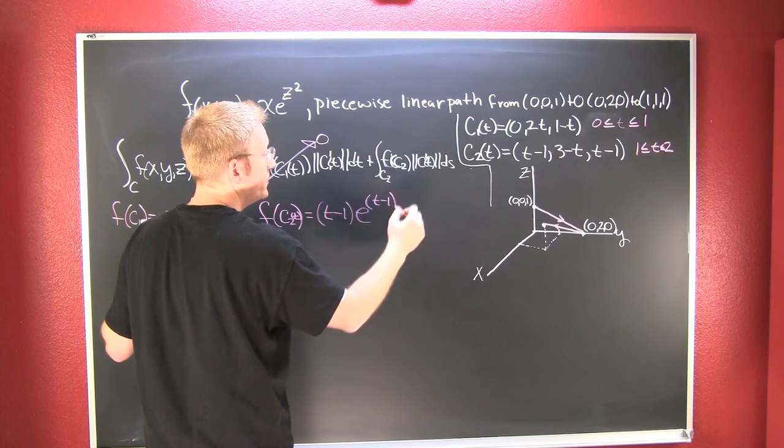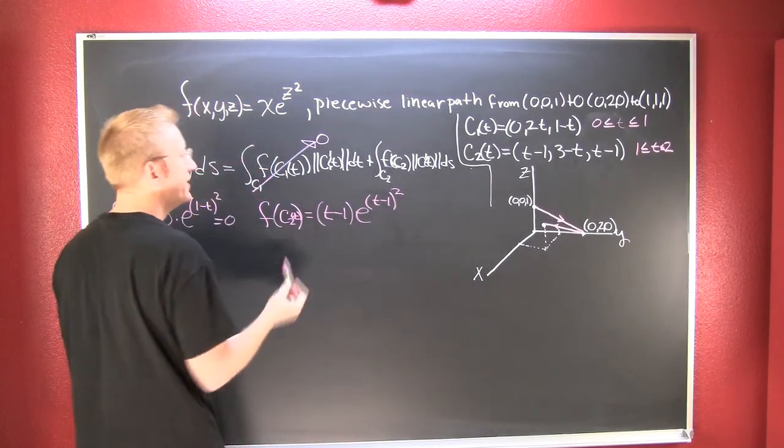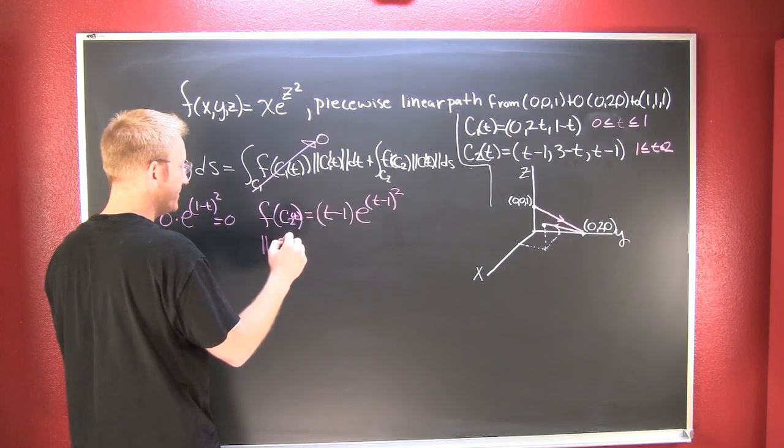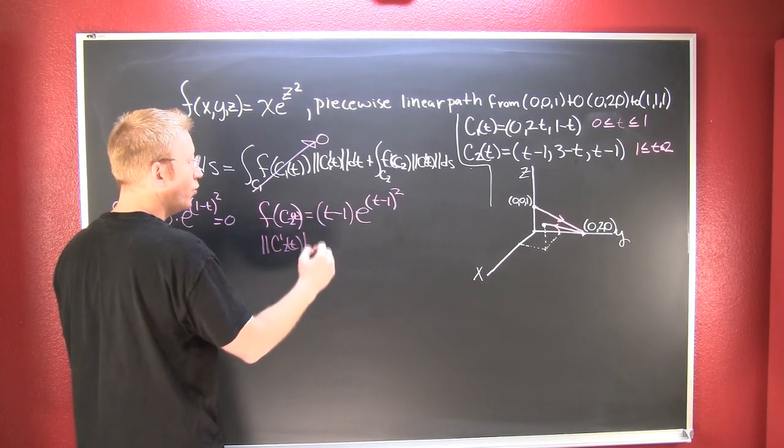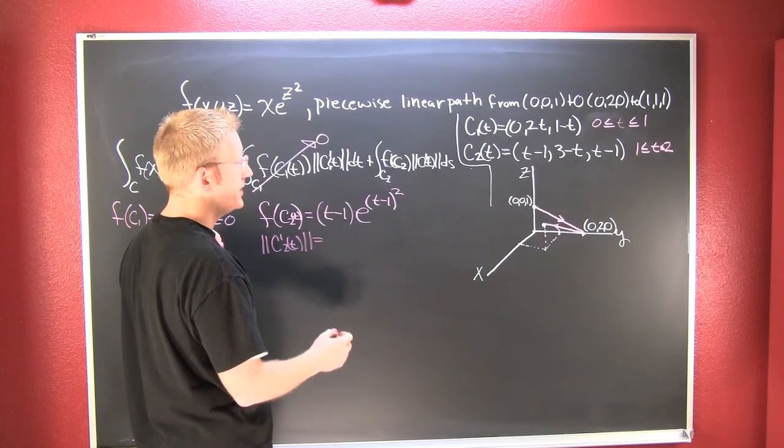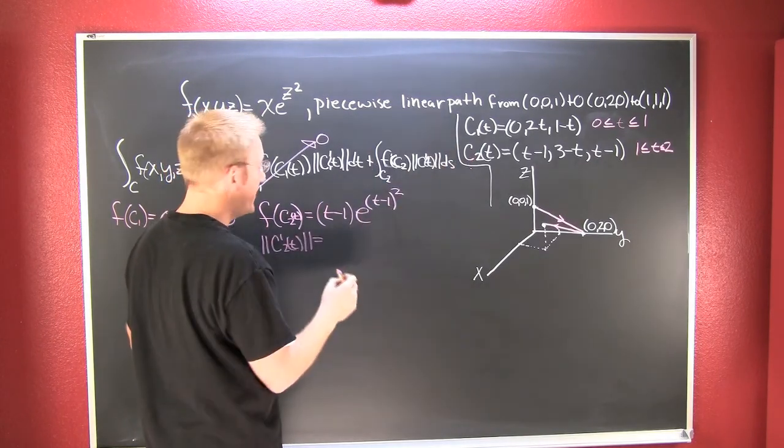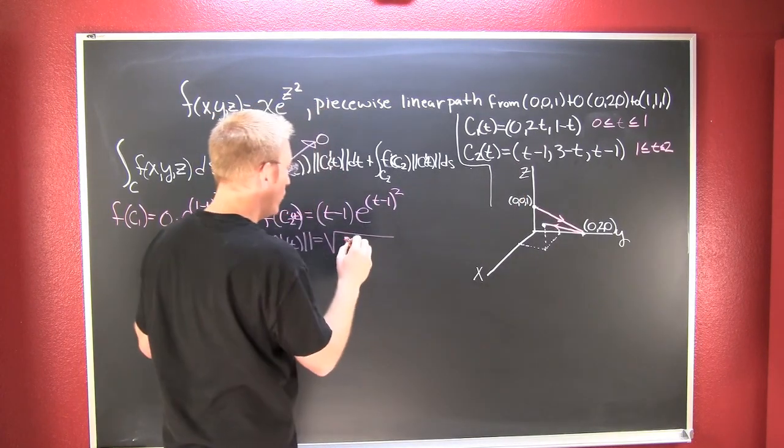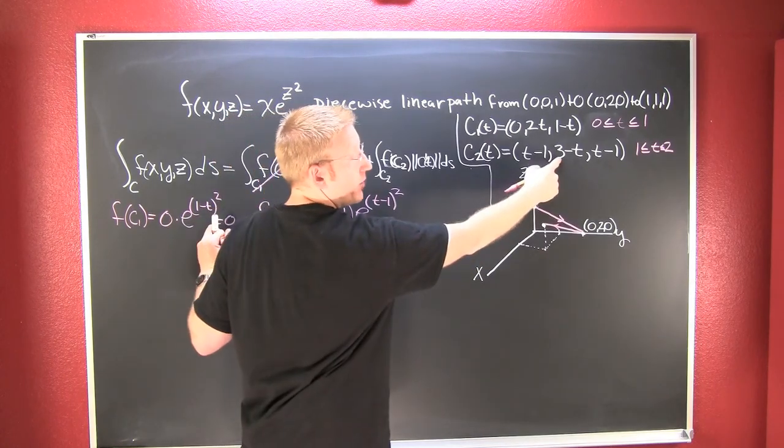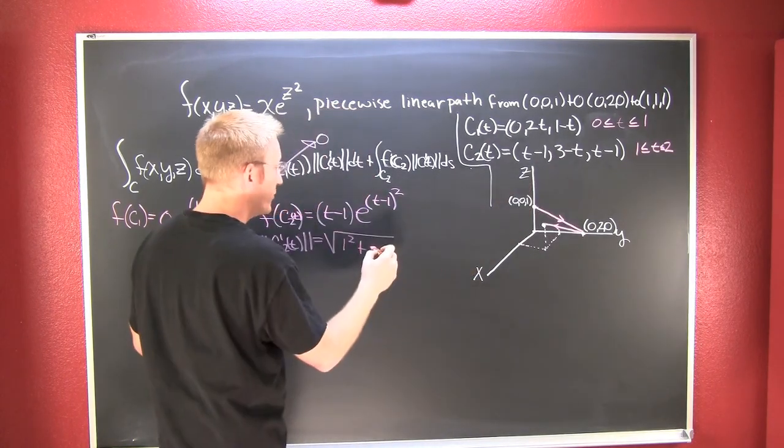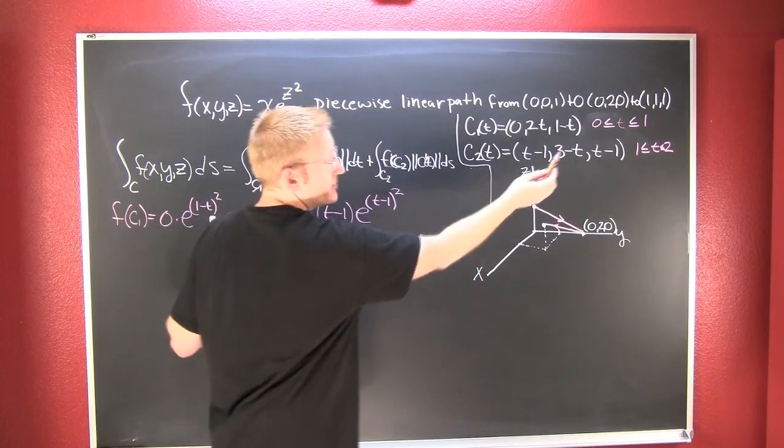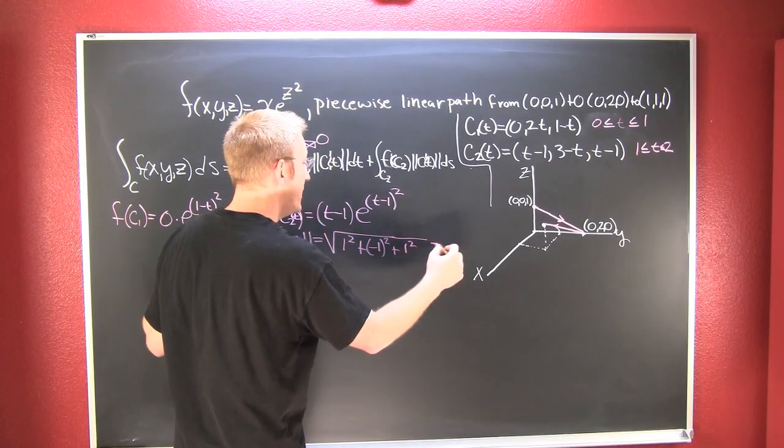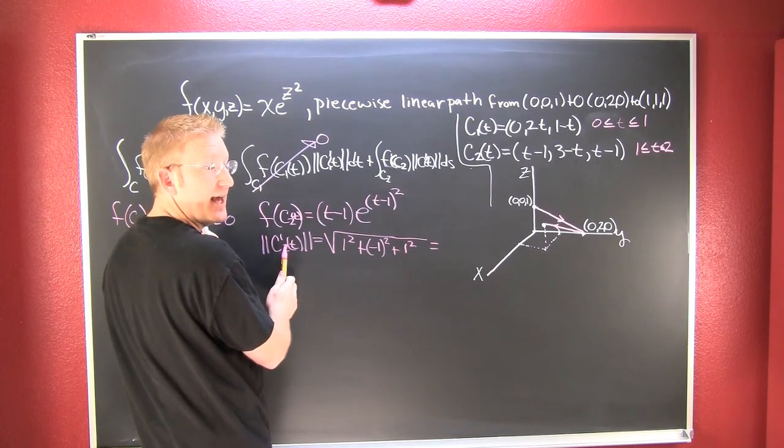We also need to find the magnitude of the derivative of c2(t). That's going to be the square root of: the derivative of my x component is 1, so 1², plus the derivative of my y component is -1, which is (-1)², and the derivative of my third component is 1, so plus 1². We see that the magnitude of the tangent of the second path is the square root of 3.